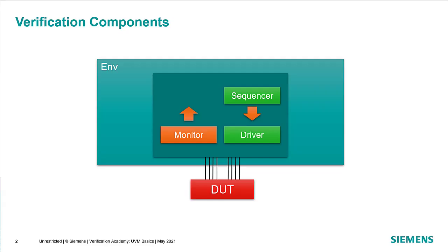We saw in the previous session that a typical grouping of components — a sequencer, a driver, and a monitor — are put together in what we refer to as a UVM agent. There are other types of components, and this particular arrangement isn't necessarily fixed for every component, but we are going to use this as an example of how to actually build and connect components in UVM.